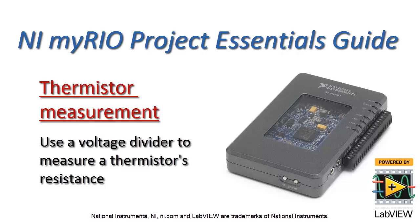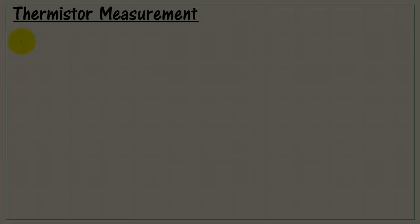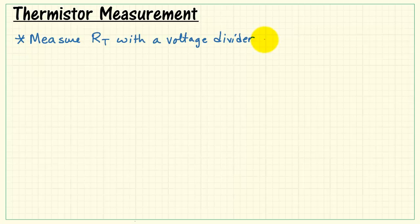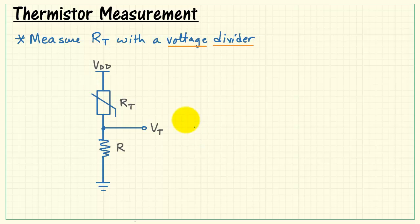Now let's learn how to use a voltage divider to measure a thermistor's resistance. Recall that a voltage divider takes a fixed voltage and divides it down using two resistors.